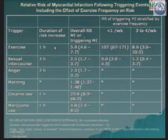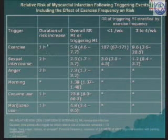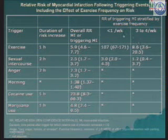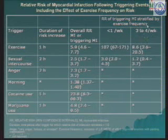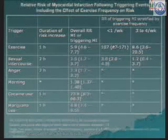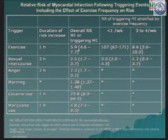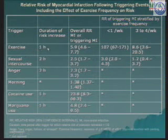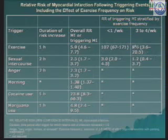One might ask: if exercise is good, why are the chances of MI higher in the first hour? We have to look at the other part of the slide. People exercising less than once a week have higher risk, but patients exercising regularly are in a much better state of health and the chances come down drastically. The relative risk is 107 times higher if exercising less than once a week, but only 8.6 if exercising 3 to 4 times a week. Exercising is good — we are not discouraging it. Although the risk is high in the first hour, it is much higher in patients who are inactive or obese, and much lower in those regularly exercising.